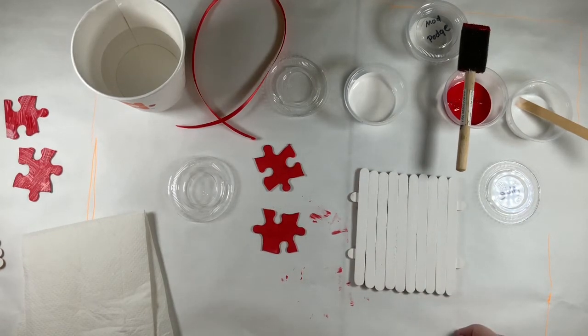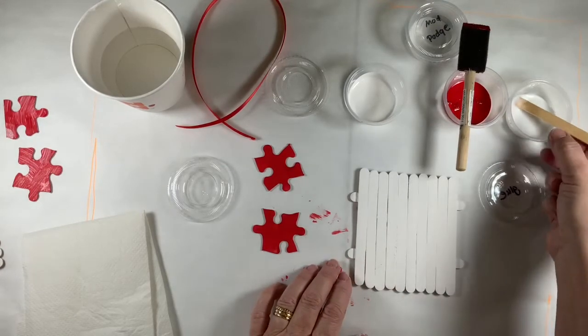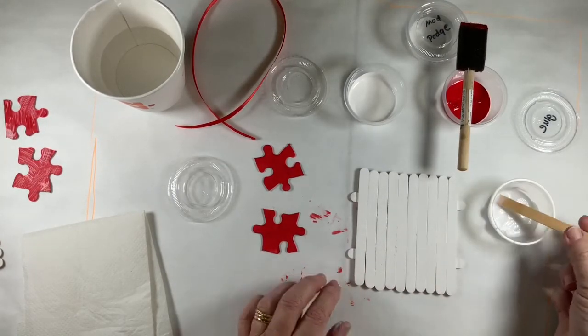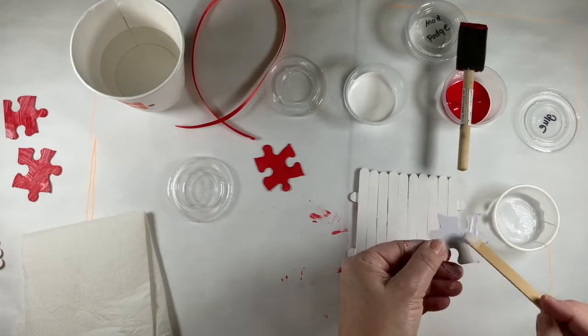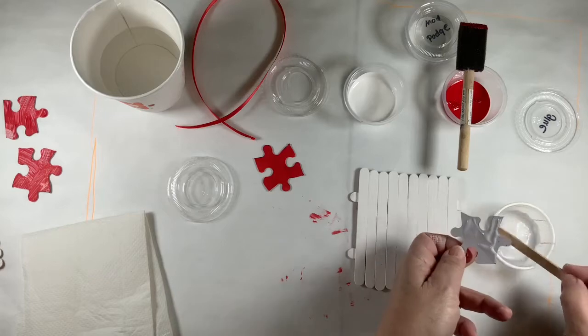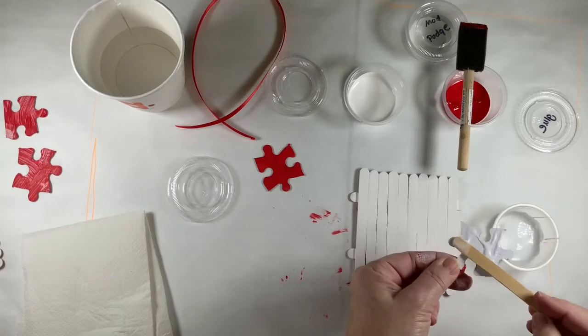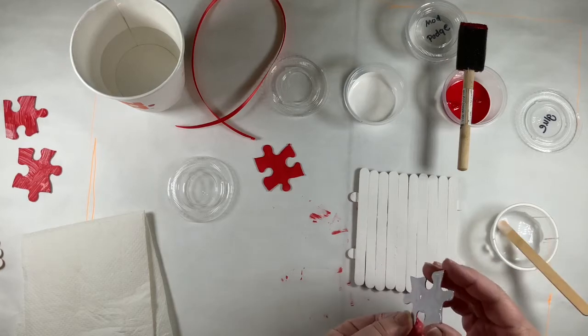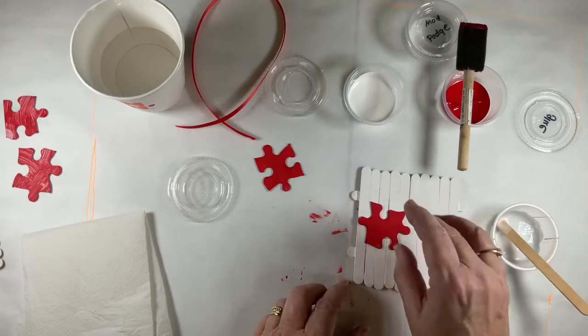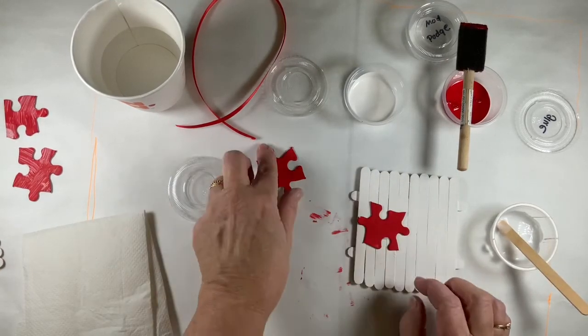And I'm going to move these so they can dry. And here we have puzzle pieces that already have the second coat on. So what we're going to do is we're going to glue the puzzle pieces in the middle of our plaque here. So just spread some glue all over this puzzle piece.